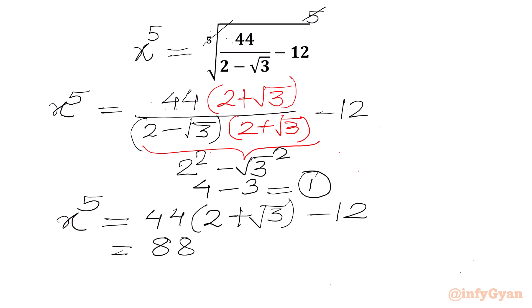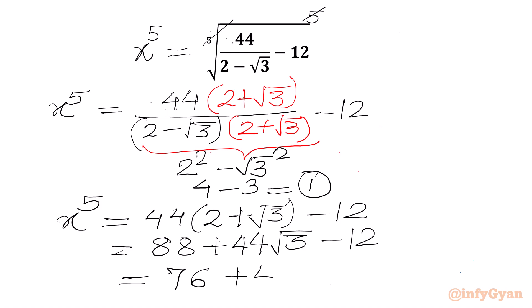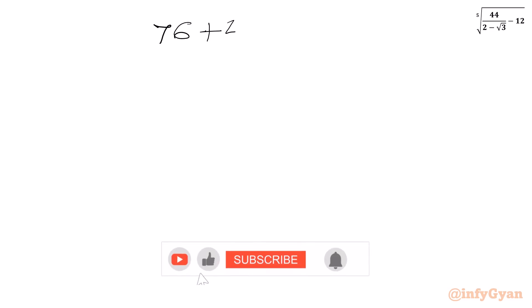Expanding: 44 times 2 is 88, and 88 minus 12 is 76, plus 44 square root 3. So the value of x⁵ is 76 plus 44 square root 3.